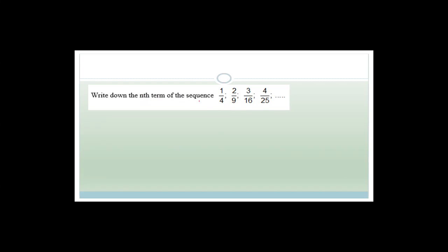The first question says: write down the nth term of the sequence. Our first term is 1/4, our second term is 2/9, our third term is 3/16, and our fourth term is 4/25.